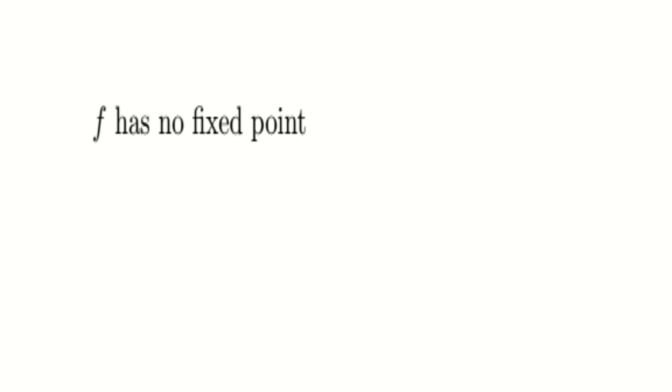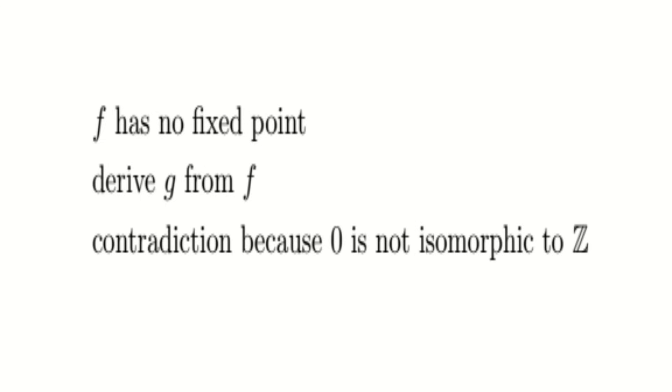Okay, to reiterate, we assume that there was a continuous function f that did not have a fixed point. We derived a deformation retract g from f, which was an isomorphism in the base homotopy category. Then, derived a contradiction because an isomorphism was not preserved through a functor.